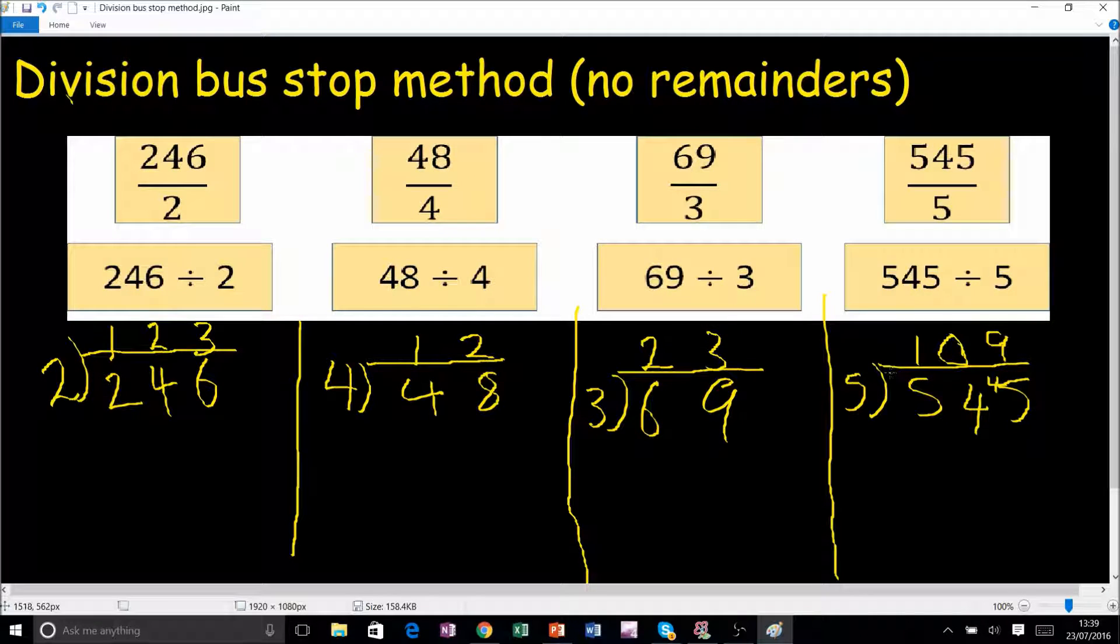So that is division using the bus stop method. It was meant to be with no remainders, but obviously the last one had a remainder in it. I will be doing another video with questions similar to the last one. I hope you understood that. As you saw, it wasn't too hard, it was pretty straightforward. Thank you for tuning to Paul's Maths Lab, and I'll see you later.